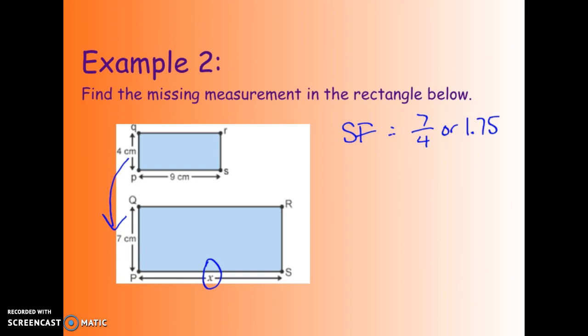So to get to this missing side X, I'm going to take the measurement of PS and multiply it by the scale factor because the big side capital V capital S corresponds to it. So I'm going to take 9 times 7 fourths, so I could put 9 over 1 times 7 over 4.